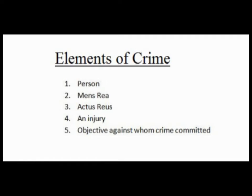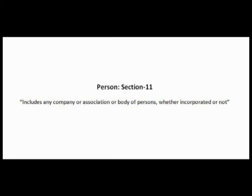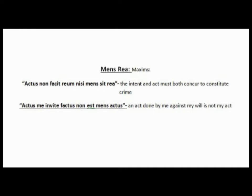There are essential ingredients when we talk about crime: person, mens rea, actus reus, illegal act, and the object against whom the act of crime is committed. We will deal with them one by one. First, person — the definition of a person is given under Section 11 of the Indian Penal Code, which states that a person includes any company or association or body of persons, whether incorporated or not. Interestingly, a corporation can also be liable for criminal activities, even though it has no physical body.